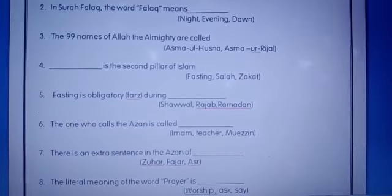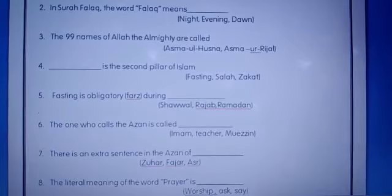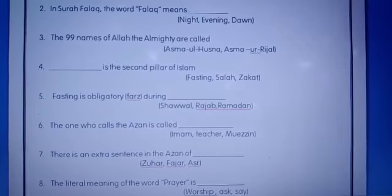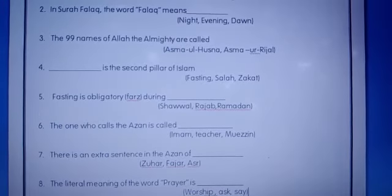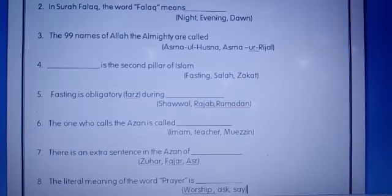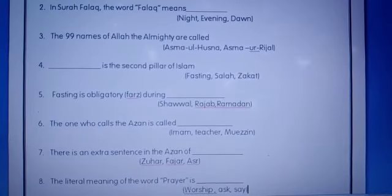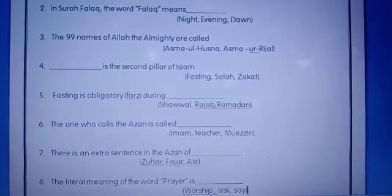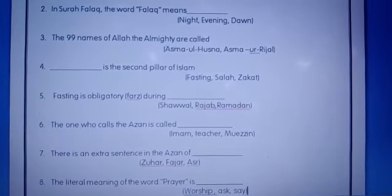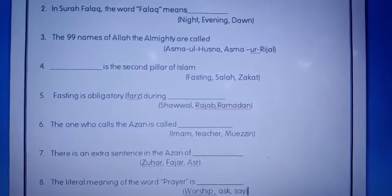Number six: the one who calls the azan is called — an imam, teacher, or muazzin. The correct answer is muazzin. Number seven: there is an extra sentence in the azan of — Zuhr, Fajr, or Asr.